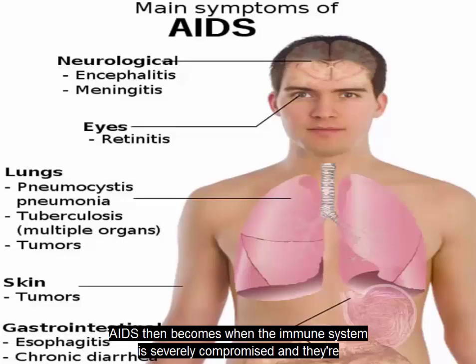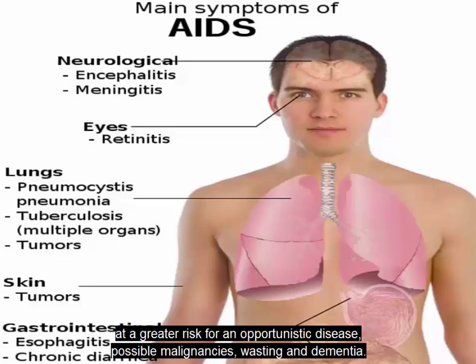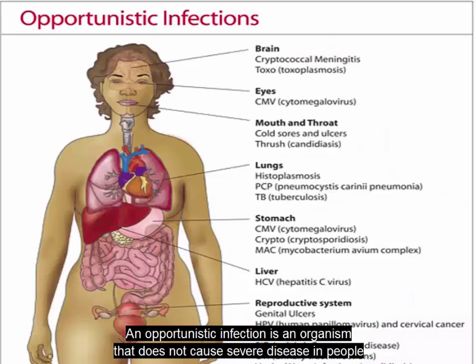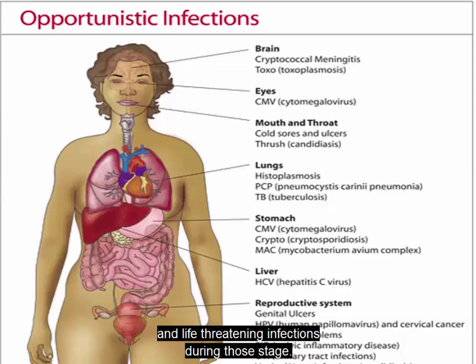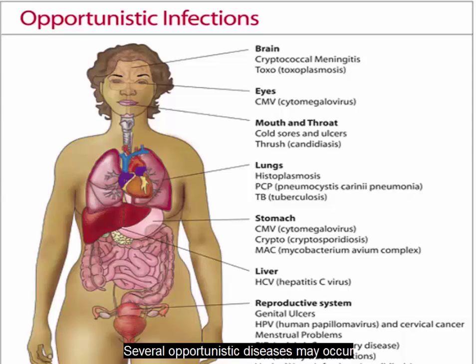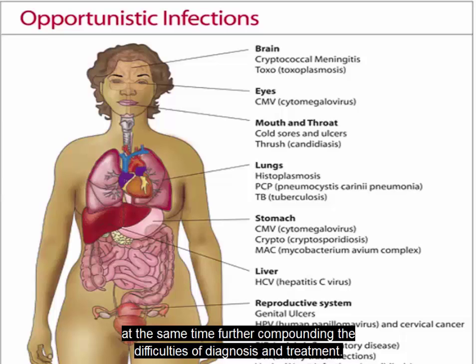AIDS occurs when the immune system is severely compromised, and patients are at a greater risk for an opportunistic disease, possible malignancies, wasting, and dementia. An opportunistic infection is caused by an organism that does not cause severe disease in people with a functioning immune system but can now cause debilitating, disseminated, and life-threatening infections. Several opportunistic diseases may occur at the same time, further compounding the difficulties of diagnosis and treatment.